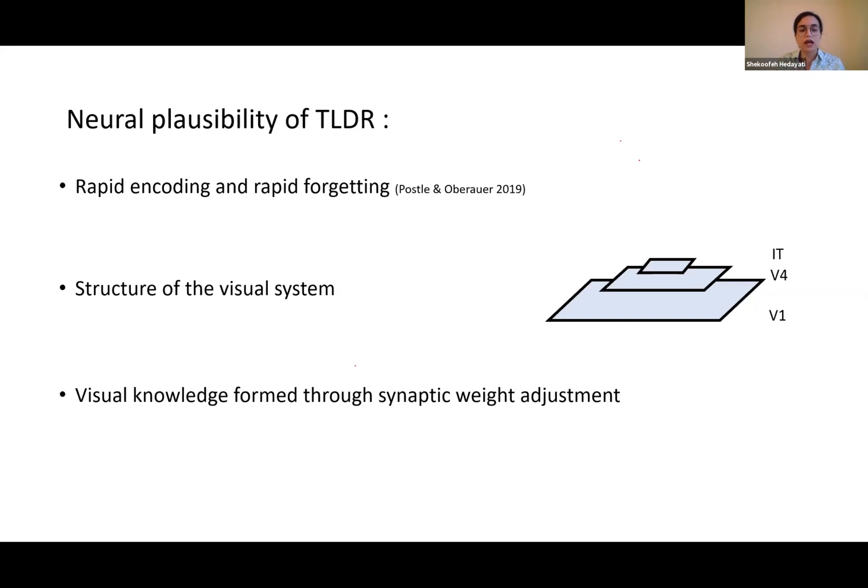It's consistent with the structure of the visual system. As we go higher in the ventral stream from V1 to V2 to IT cortex, the representation becomes more complex and abstract. The visual knowledge part of the model is formed through synaptic weight adjustments, just as the human visual system is trained through adjusting synaptic weights by seeing a lot of visual examples throughout their lives.